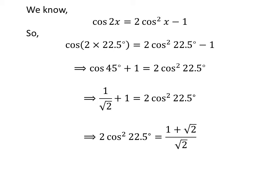Addition of 1 upon square root of 2 and 1 gives us 1 plus square root of 2 upon square root of 2. Also, I have changed the sides. So, 2 times square of cosine of 22.5 degrees is equal to 1 plus square root of 2 upon square root of 2.